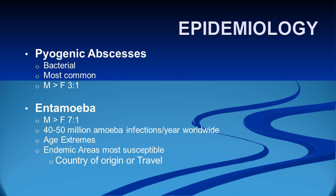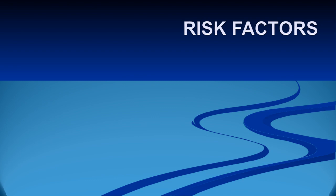Pyogenic liver abscess is most common, with a male to female ratio of 3 to 1. Amoebic liver abscess has a male to female ratio of 7 to 1, with 40 to 50 million amoeba infections per year worldwide. Extreme age and endemic areas are more susceptible, especially in the tropics.